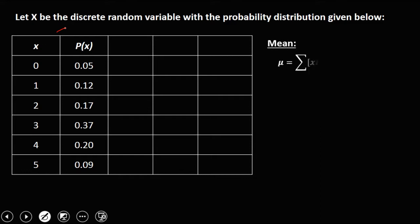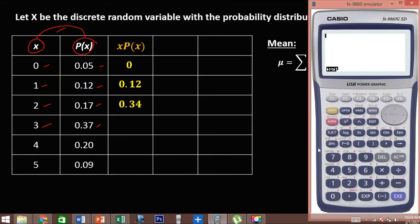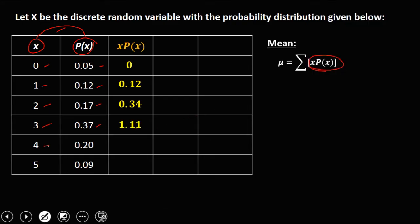Since the formula for the mean is the summation of x times P(x), we need to find first the value of x times P(x). So we multiply the x column and the P(x) column. We have 0 times 0.05, which is 0; then 1 times 0.12, that's 0.12; and 2 times 0.17, that's 0.34; and 3 times 0.37, that's 1.11; and 4 times 0.20, that's 0.80.